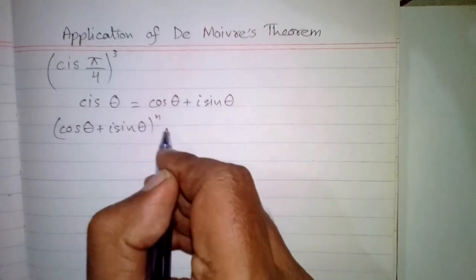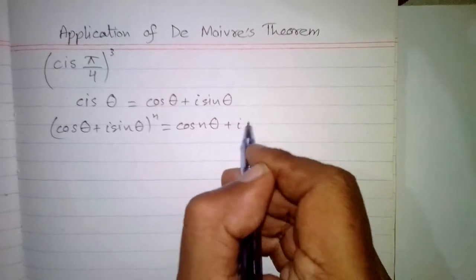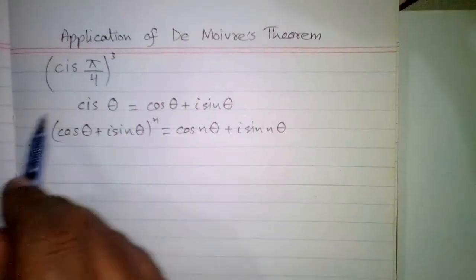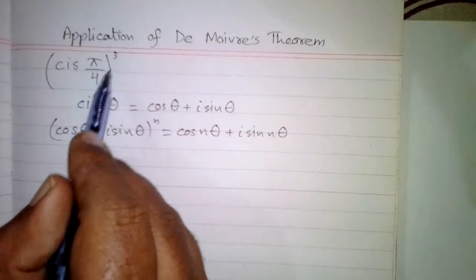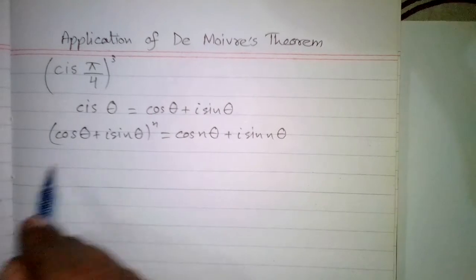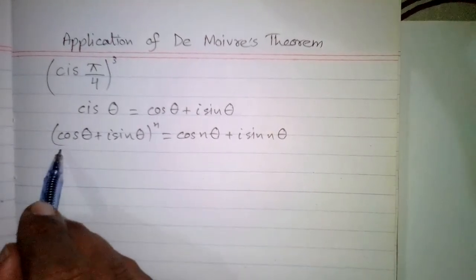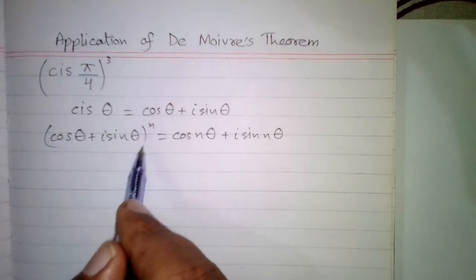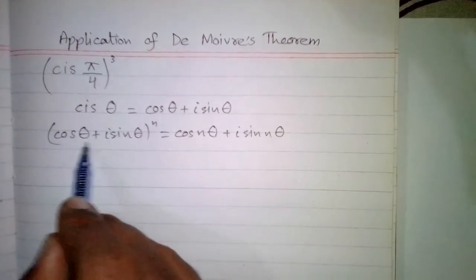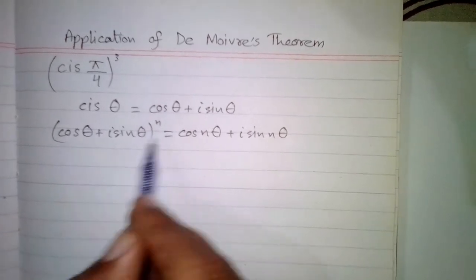De Moivre's theorem states that cos θ plus iota sine θ raised to the power n is equal to cos(nθ) plus iota sine(nθ). So if we have a power n of cos θ plus iota sine θ, this power becomes the coefficient of the angle — we multiply n by θ.